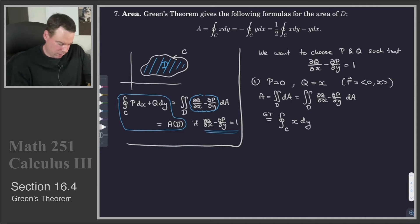And so there we go. We end up getting that the area is equal to a line integral. And so that was for a particular choice of P equals 0, Q equals x.